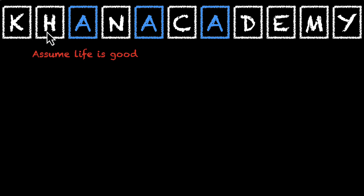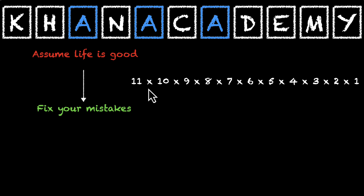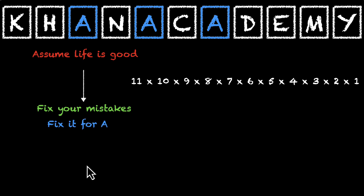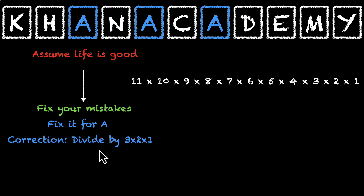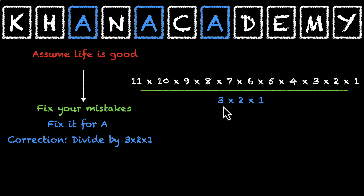Let's assume that life is good — all eleven letters are different. When life is good, we have 11 × 10 × 9 × 8 × 7 × 6 × 5 × 4 × 3 × 2 × 1 ways. Now it's time to fix our mistakes. We need to fix it for A. Because we have three A's, the correction is to divide by 3 × 2 × 1. That gives us the total number of unique ways to rearrange Khan Academy.